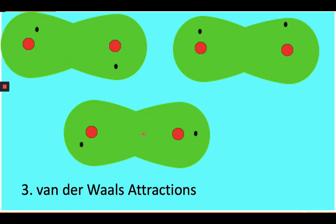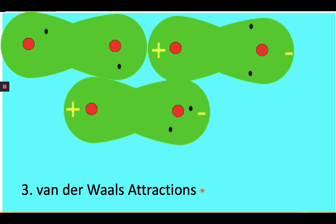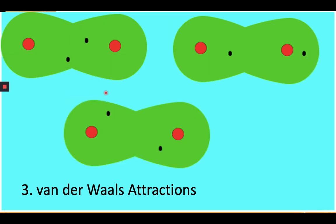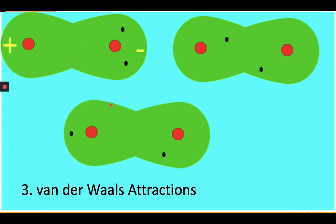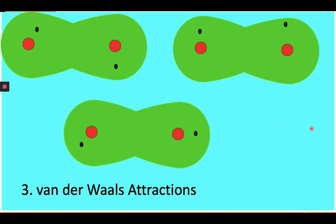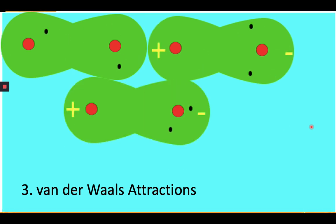The third of the non-covalent interactions are van der Waals attractions, also known as London dispersion forces. Van der Waals interaction is a distance-dependent interaction between atoms or molecules. Unlike ionic or covalent bonds, these attractions do not result from a chemical electronic bond — they are comparatively weak and therefore more susceptible to disturbance. The van der Waals force quickly vanishes at longer distances between interacting molecules.